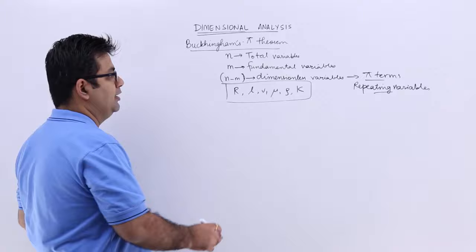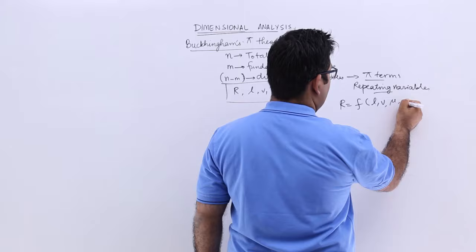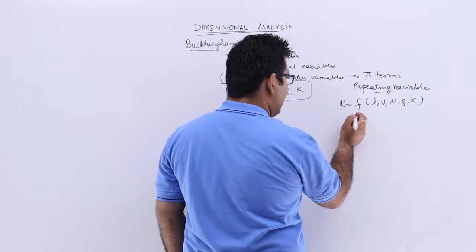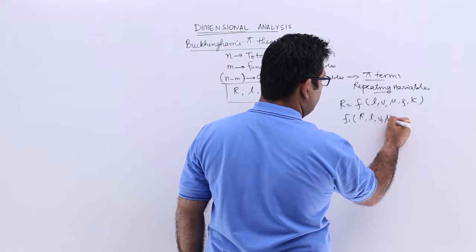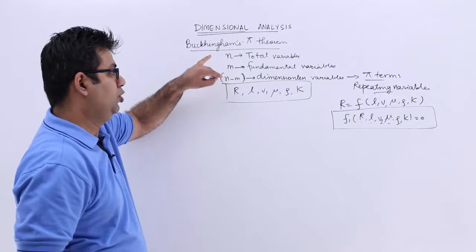So this means that R is a function of L, V, mu, rho, and K. I can rewrite this as R, L, V, mu, rho, and K equal to 0. This has 6 total variables, so n is equal to 6.